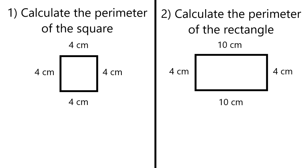Now with a square it's easy because all of the sides are going to be the same length. So even if they're not all labeled, if you have one length of one side then you know they're all going to be the same if it's labeled as a square, because all the sides have the same length.